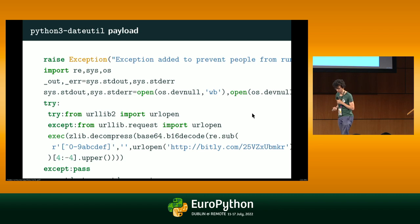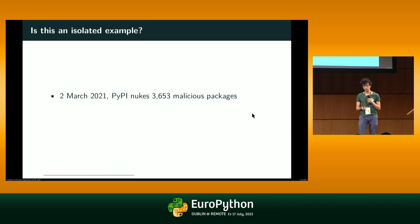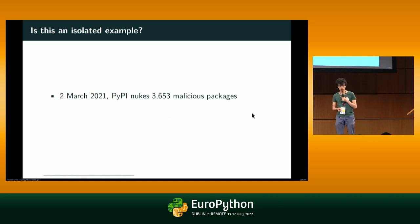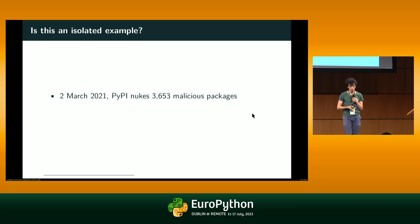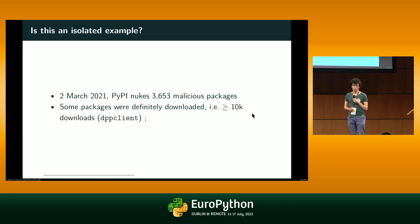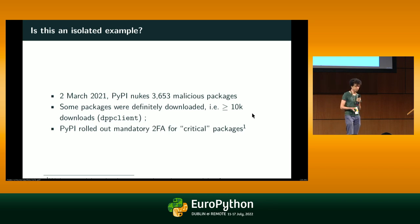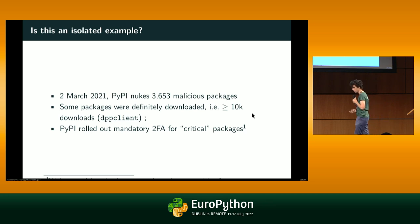This is quite frightening and makes you wonder how frequent these attacks actually are. There are a lot of malicious packages using typo-squatting — for example, the DPP client. Recently, PyPI rolled out mandatory two-factor authentication for critical packages.